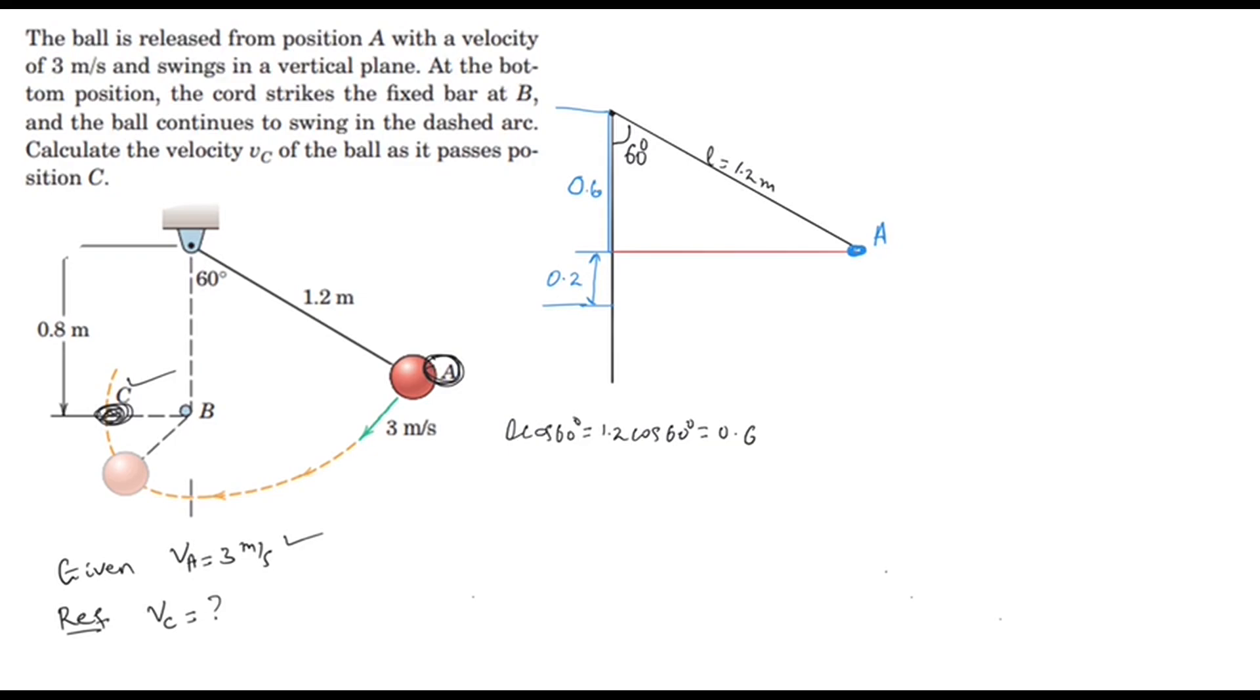The initial position is at A and the final distance is at point C. What is the elevation between the two? The maximum elevation is 0.2 meters. We know that the energy at position A and position C.